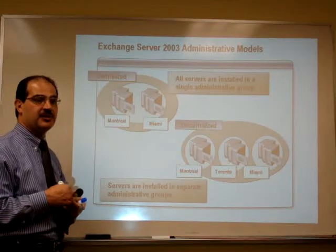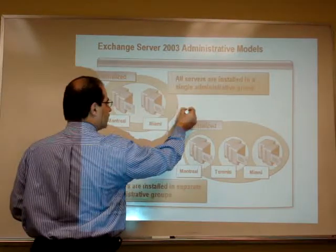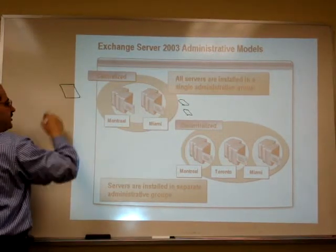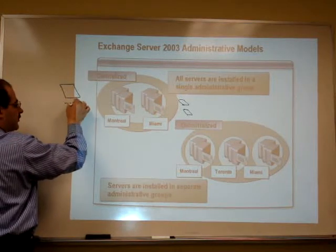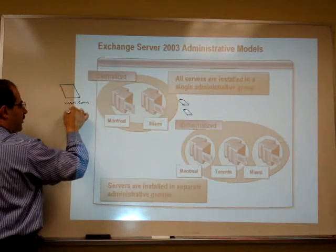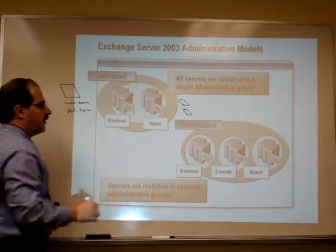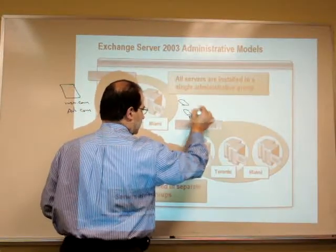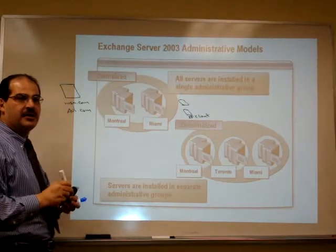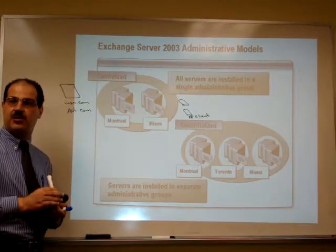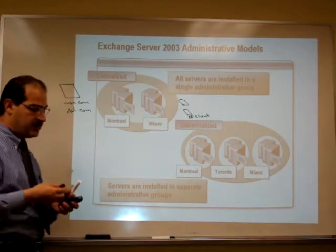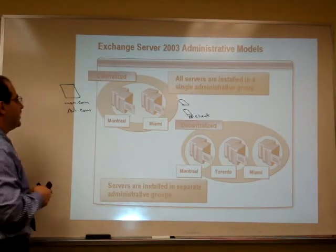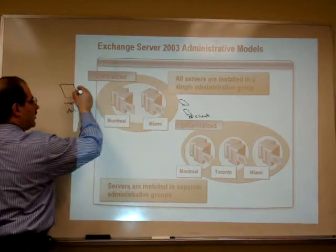When we are talking about centralized, we have a client in our network and we have an external server — for example, like MSN or AmericaOnline.com. This is just an example with an XP client. Let's take a look at how we are receiving mail and how we are sending mail. Receiving mail from an external server: the external server sends the email to your Exchange server.